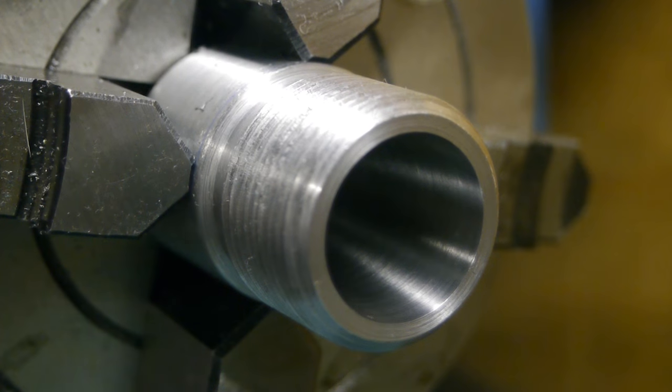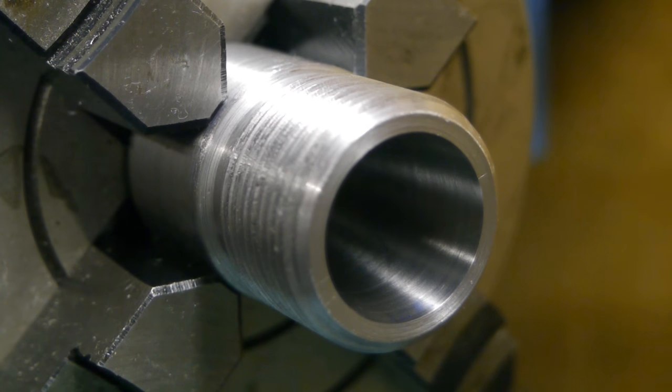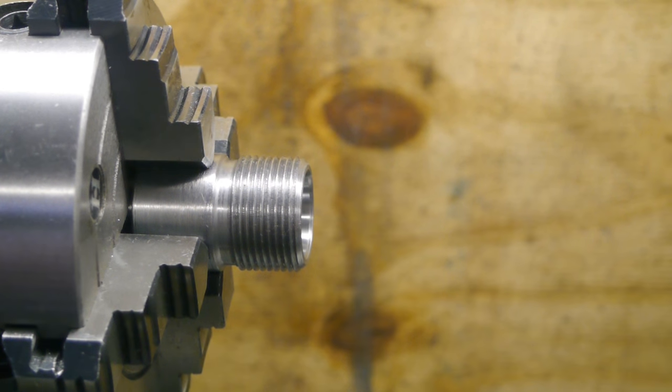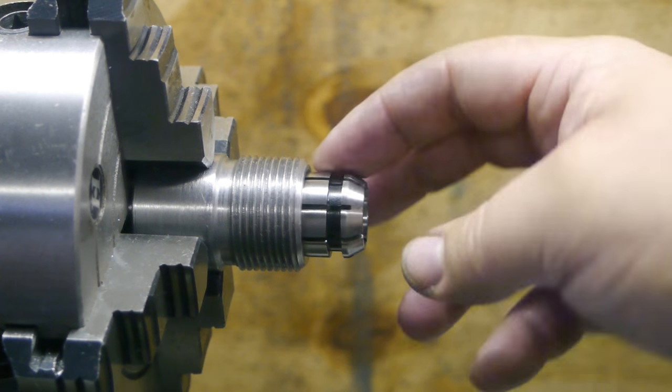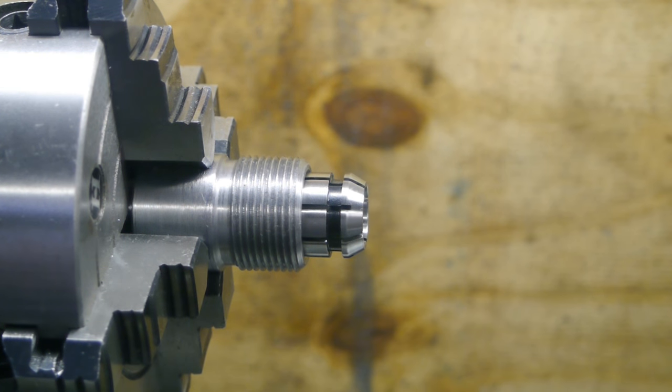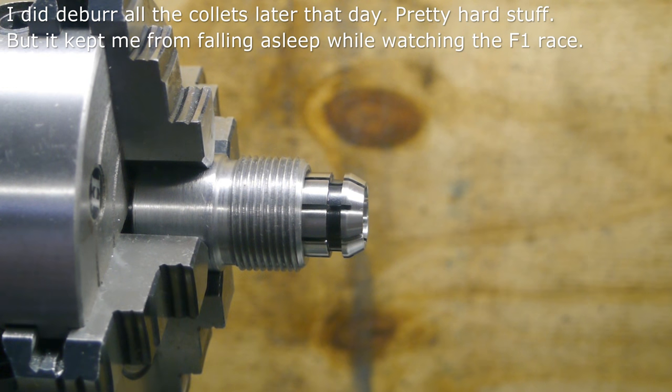Now I'm gonna cut a chamfer on the ID and then I'll put in a collet and do a little measurement, see what kind of runout I got. I cut the chamfer and now it's time for a test. These things are pretty sharp, they should be deburred I guess.